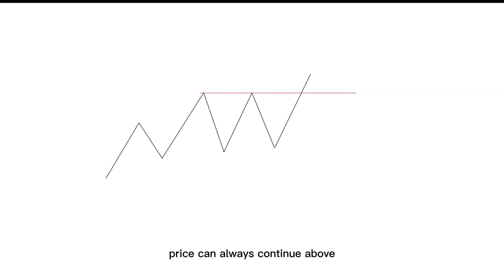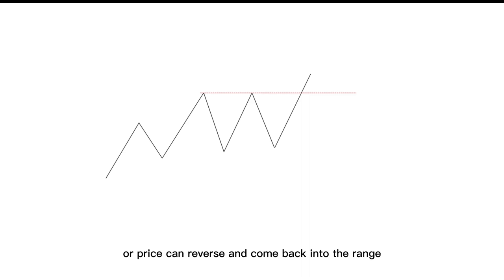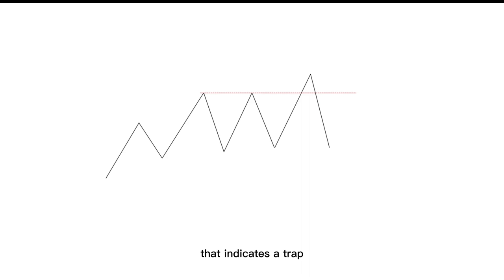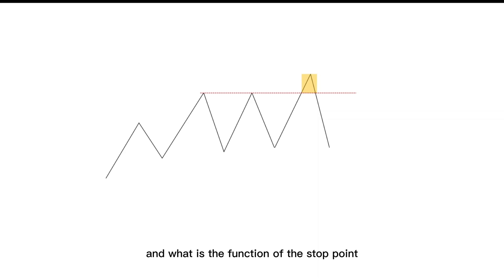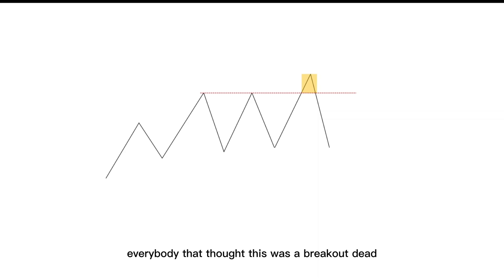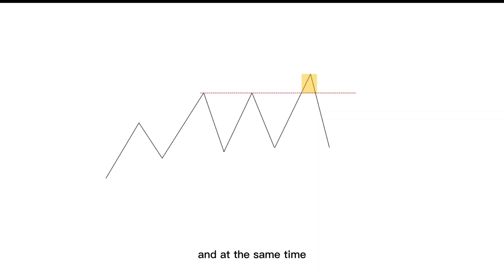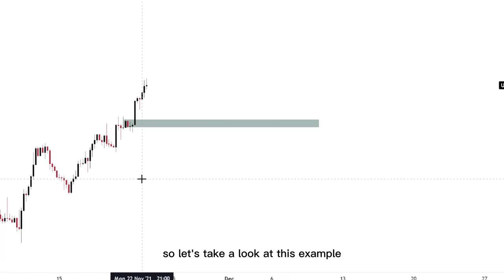Price can always continue above and completely continue with the trend, or price can reverse and come back into the range. What does that reversal indicate? That indicates a trap — a stop hunt. And what is the function of the stop hunt? The stop hunt is a trap. In this situation, everybody that thought this was a breakout and that price was going to continue higher got trapped. At the same time, the stop losses of those who sold at the previous resistance point — their liquidity got absorbed.